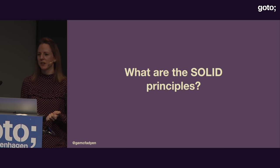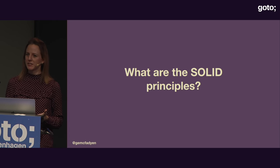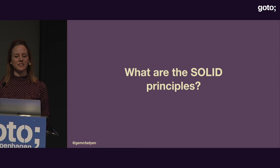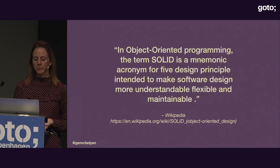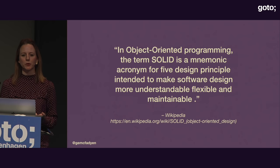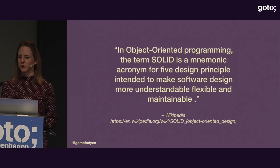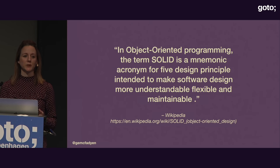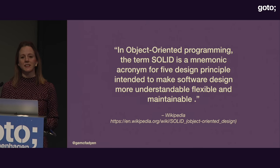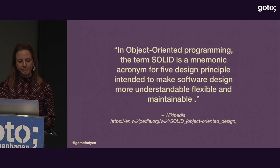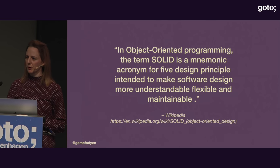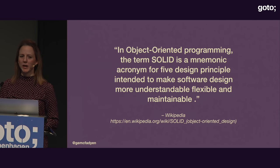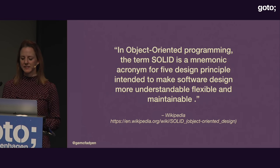The SOLID principles are a set of five design principles where each letter stands for a different principle. When applied, they're intended to improve the quality of your software — making it easier to extend and less likely to break when you make changes. They were originally devised for object-oriented programming, but I wanted to see if they'd work in the functional landscape.